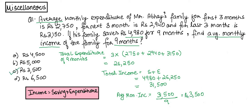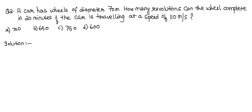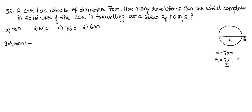Question number two: a car has wheels of diameter 70 metres. The wheels are circular. If the diameter is 70 metres, the radius is half the diameter, so radius = 70 ÷ 2 = 35 metres. How many revolutions can the wheel complete in 20 minutes if the car is traveling at a speed of 110 metres per second?